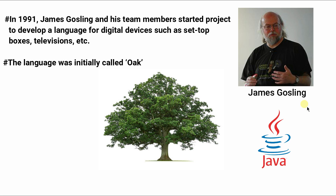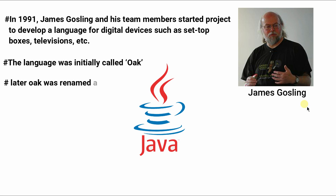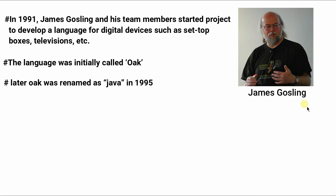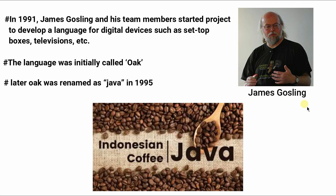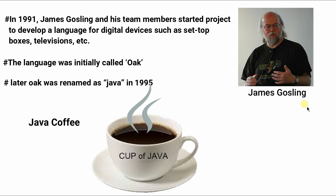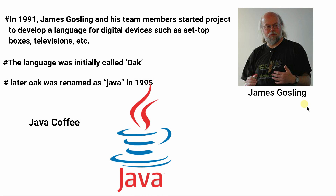Why Oak? Because of the Oak tree that stood outside Gosling's office. It also went by the name Green. Later, Oak was renamed Java in 1995 due to some reasons. Actually, due to some issue, the team wanted to change the name of Oak, but no new name was coming up. After a lot of discussion, James Gosling and his team members took a break and went out for coffee at a café close to the Gosling office. In that coffee café, the coffee had a brand name Java Coffee. From there, the name Java was finalized by James Gosling and his team.